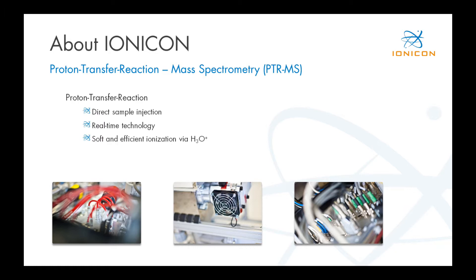First, we have proton transfer reaction. This is an ionization method that uses direct sample injection, so you don't need any sample preparation, and it's a real-time technology — you get your quantitative results on your measurement computer in real-time. It's very efficient and also a soft ionization method, which means you get a quite low level of fragmentation. In case you want to use different reagent ions, such as NO+ or O2+, we call this SRI, and if you even want to use Krypton+, we call this SRI+. SRI stands for Selective Reagent Ionization.